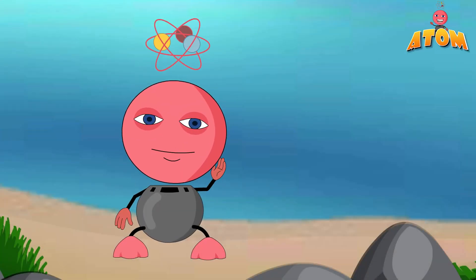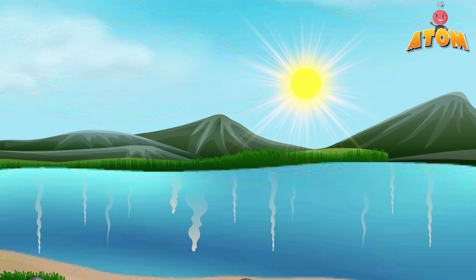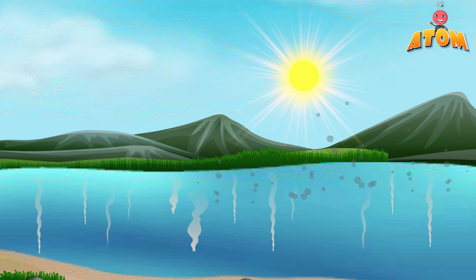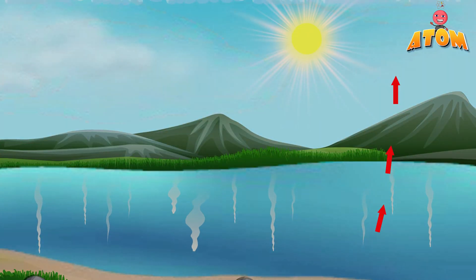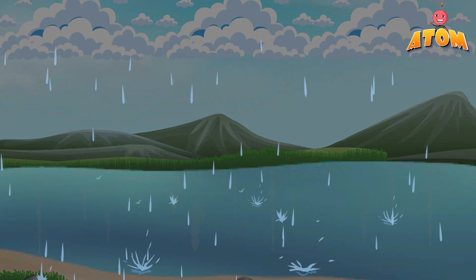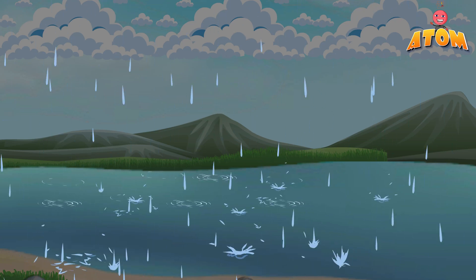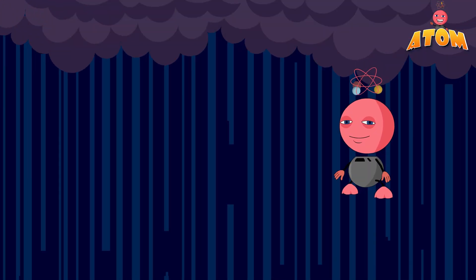Here's what happens: water in lakes, rivers, and oceans evaporates into the air due to the Sun's heat. This water vapor rises up and cools down in the higher, cooler parts of the atmosphere. When it meets tiny particles floating in the air, the water condenses around them, beginning the life of a raindrop.